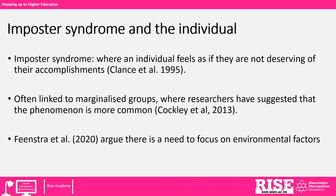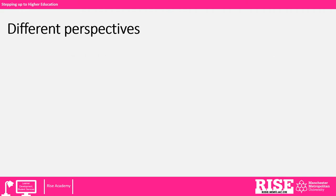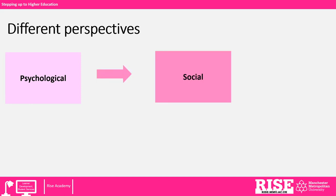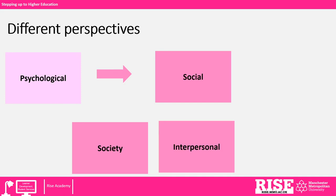Feenstra et al. (2020), by contrast, argue that there is a need to focus not just on the individual but on environmental factors. They argue that there is a need to consider different perspectives. So far, imposter syndrome has been understood from a psychological perspective, and there should be a shift to considering imposter syndrome from a social perspective — looking at society, the structures of society, interpersonal factors, and the role of institutions too. The rest of this lecture will explore some of these concepts in more detail.